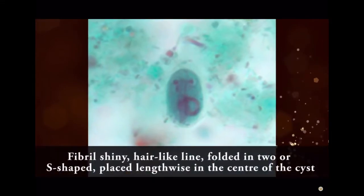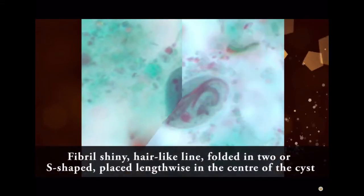Fibrils are shiny, hair-like lines, folded in 2 or S-shaped, placed lengthwise in the center of the cyst.